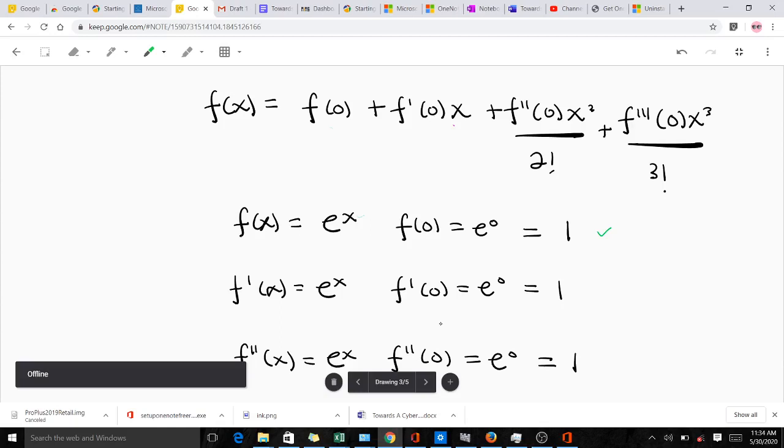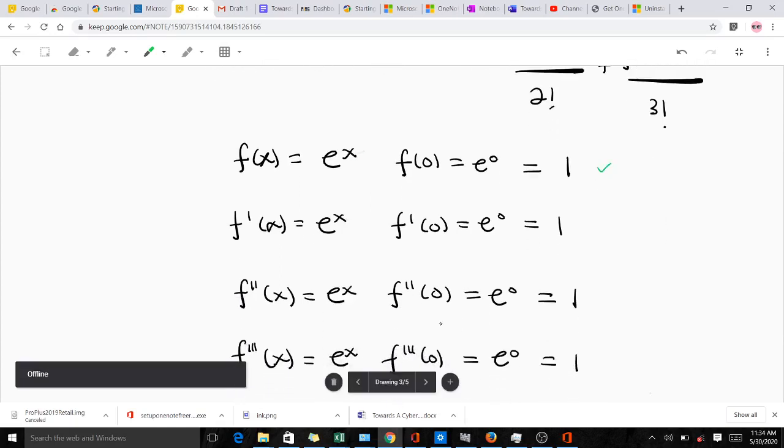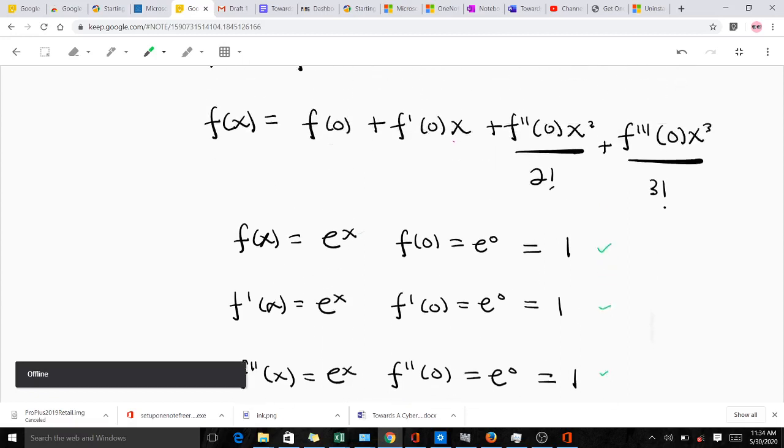So f'(x) will give us e^x, and when you put in 0 we will get 1. So for all of them we are going to get 1. After getting 1, that means you have to make the substitution into our main formula.